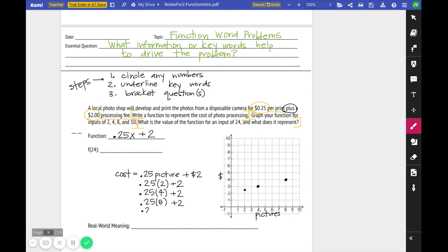Then $0.25 times 10 plus $2 equates to $2.50 plus the $2 processing fee is $4.50. There's kind of our graph. We've got some points plotted.